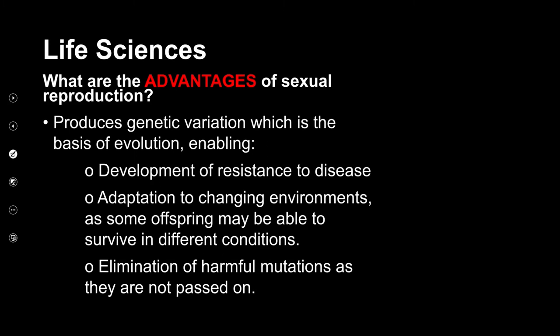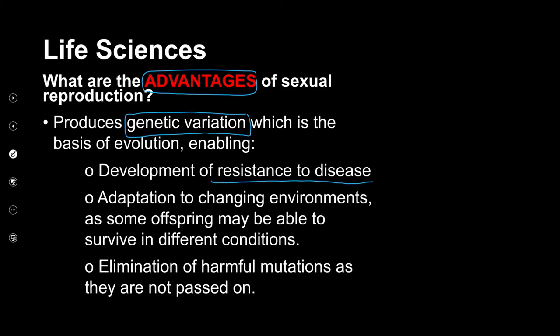The advantages of sexual reproduction are mostly about genetic variation. When we have genetic variation, we can get something new. Maybe the plant is resistant to a disease, or when the environment changes, because it's got something new, it stands a really good chance to survive in these different situations.